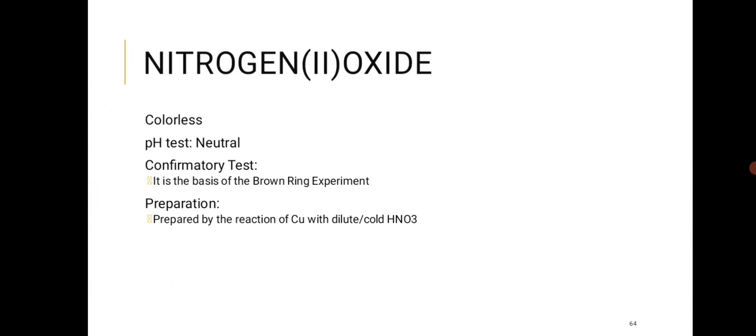Quick bonus question for students: before 6 o'clock, state the function of MnO2 in a specific primary cell and name that primary cell. Nitrogen monoxide (NO) is colorless and neutral. It is prepared by the reaction of copper with dilute or cooled HNO3. Bonus: also show the reaction of copper with hot concentrated HNO3.